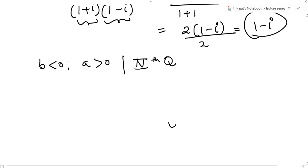What will be the principal value? Principal value will be minus tan inverse mod b by a. So minus tan inverse 1, because minus 1 upon 1 is minus 1, and mod value of minus 1 is 1.